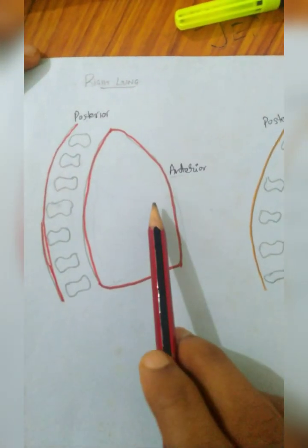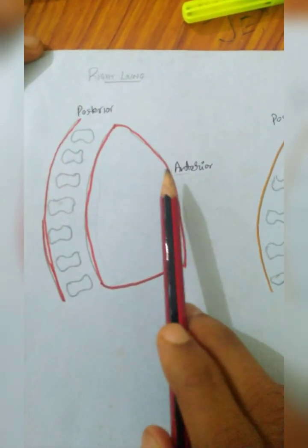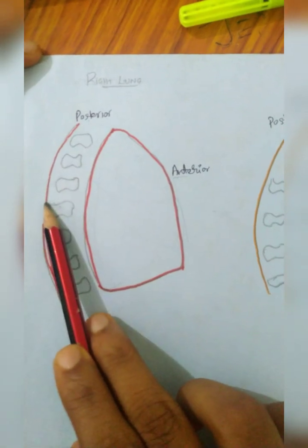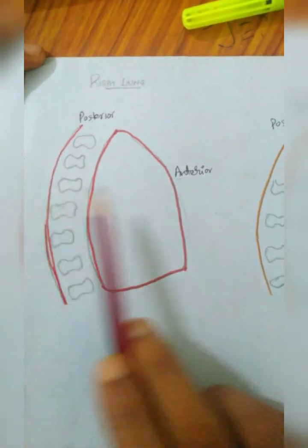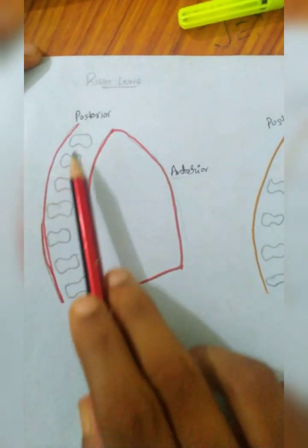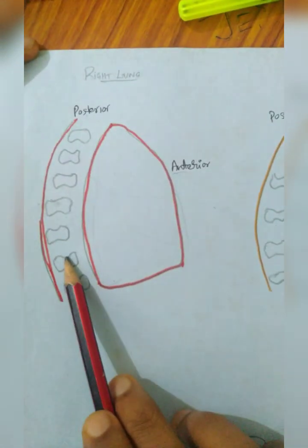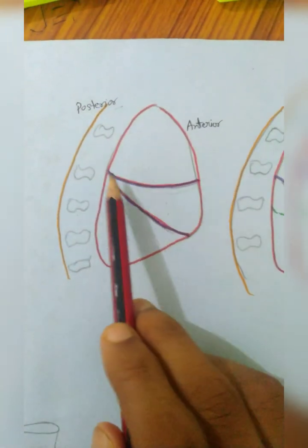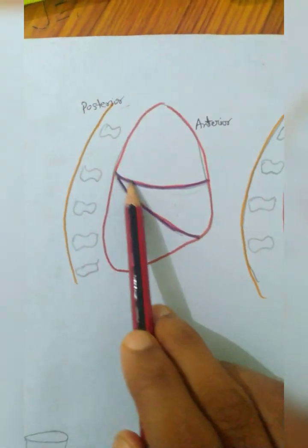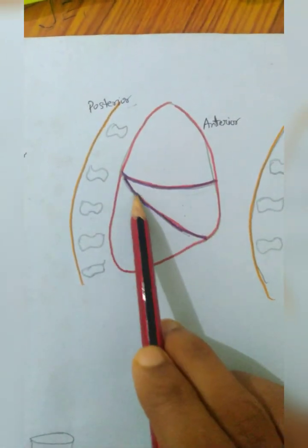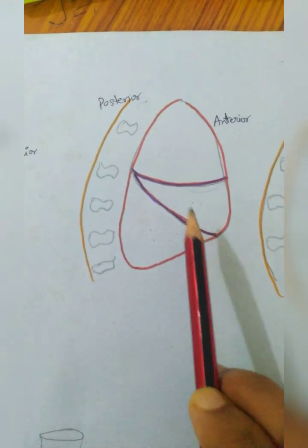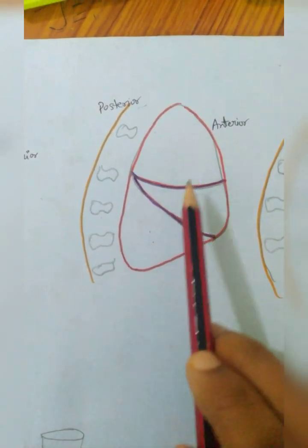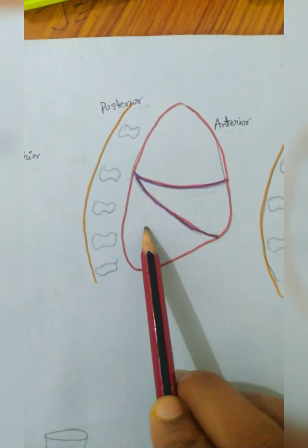First we are dealing with the right lung. This is the anterior portion and this is the posterior portion — this is the lateral view of the lung, anterior portion and posterior portion related to the spine. We have to draw two fissures in the right lung, and we can divide it into upper lobe, middle lobe, and lower lobe.